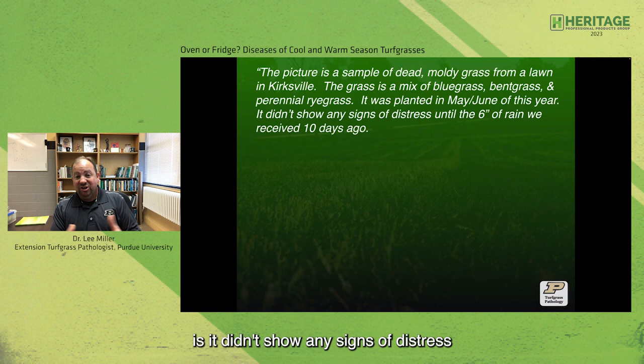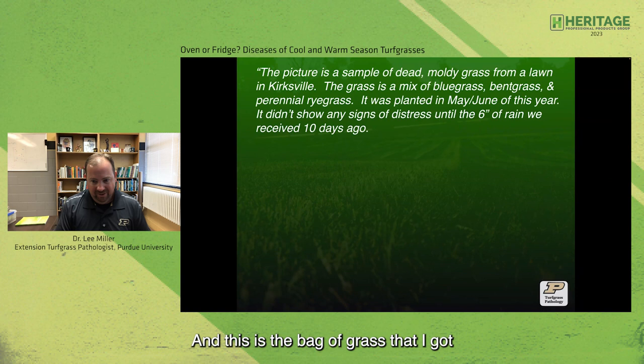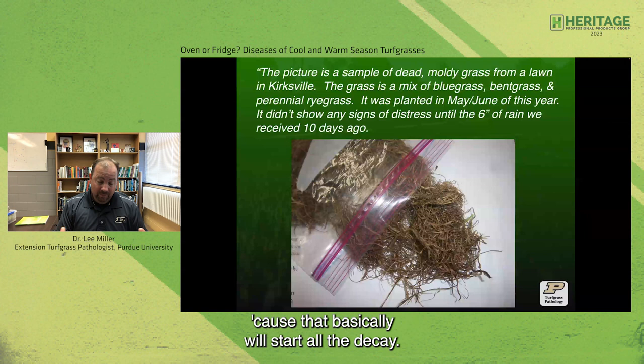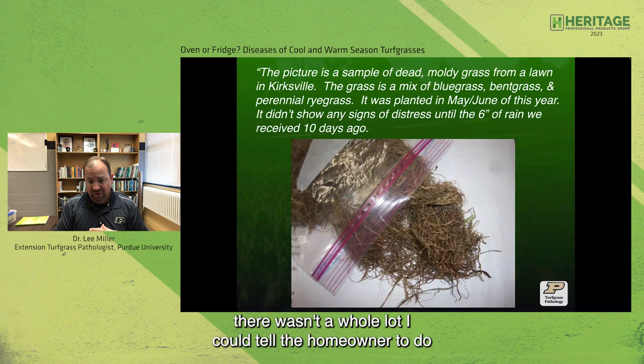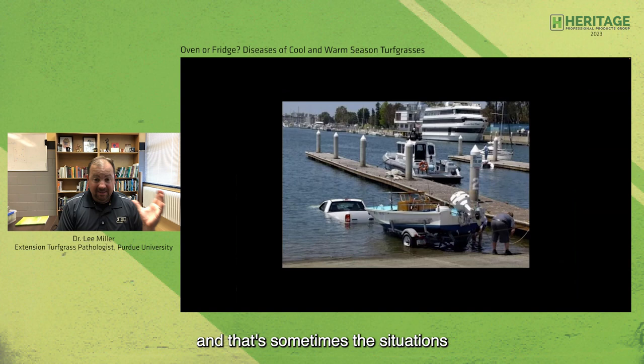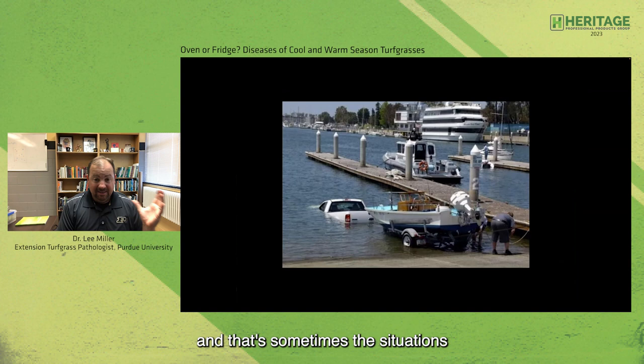The real kicker was it didn't show any signs of distress until six inches of rain. There wasn't a lot in that bag that was going to make it. I'll also reiterate this at the end: when you send a sample in, don't send it in a plastic bag because that will start all the decay. In this case there wasn't much I could tell the homeowner to do other than try to reseed with tall fescue or Kentucky bluegrass — this obviously wasn't going to make it.